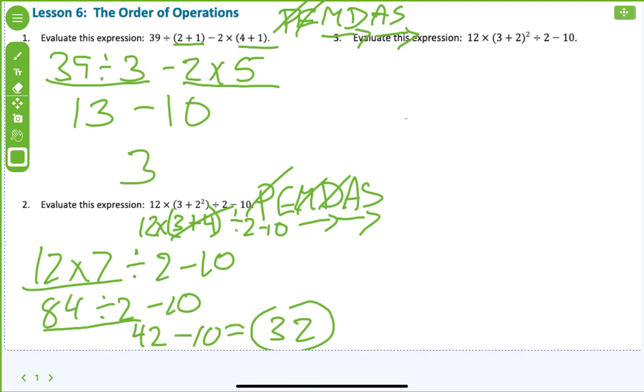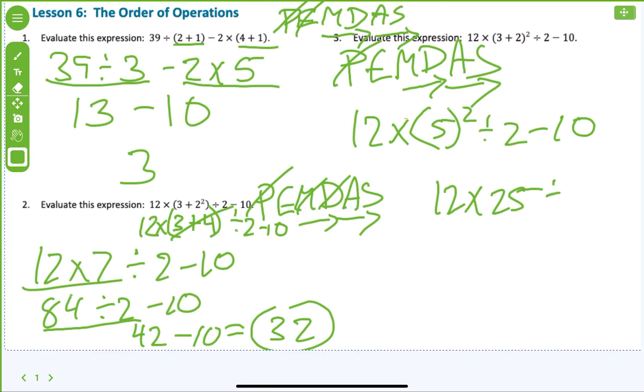So guess what Mr. Anderson is going to do up here for number 3? He's going to write down PEMDAS to make sure he remembers what to do. Now, I have parentheses and an exponent. What do I do first? What's inside parentheses? So what is 12 times, and what is 3 plus 2? 3 plus 2 is 5. Sorry. That is squared divided by 2 minus 10. Well, what is 5 squared? 25. 12 times 25 divided by 2 minus 10. Now I'm done with exponents.